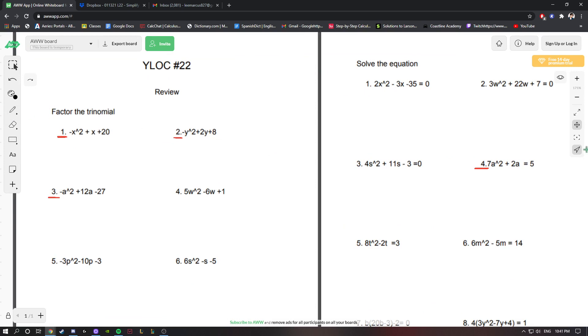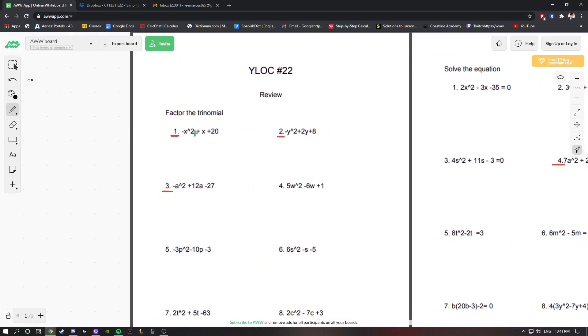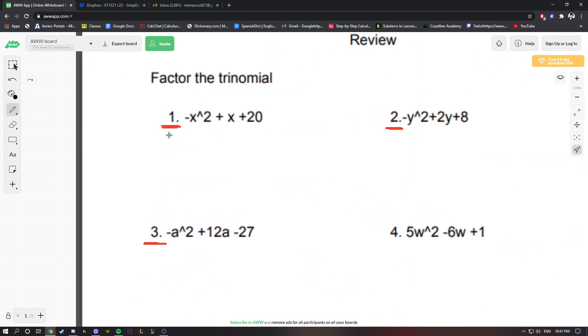Starting off with number 1, we're going to factor the trinomial. Our first question is -x² + x + 20. What I like doing is initially factoring out this negative on the outside, so we'll get x² - x - 20.